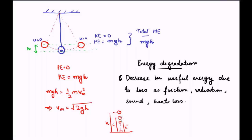I think with these examples we have a sufficiently clear picture of what energy degradation is. With this I will close today's lecture. In the next lecture we will see examples of conservation of energy and conservation of mechanical energy — how we can correlate potential energy and kinetic energy, and use conservation of energy to rapidly calculate velocity, potential energy, or kinetic energy of a body under different scenarios. Till the next lecture, have a great day. Goodbye.